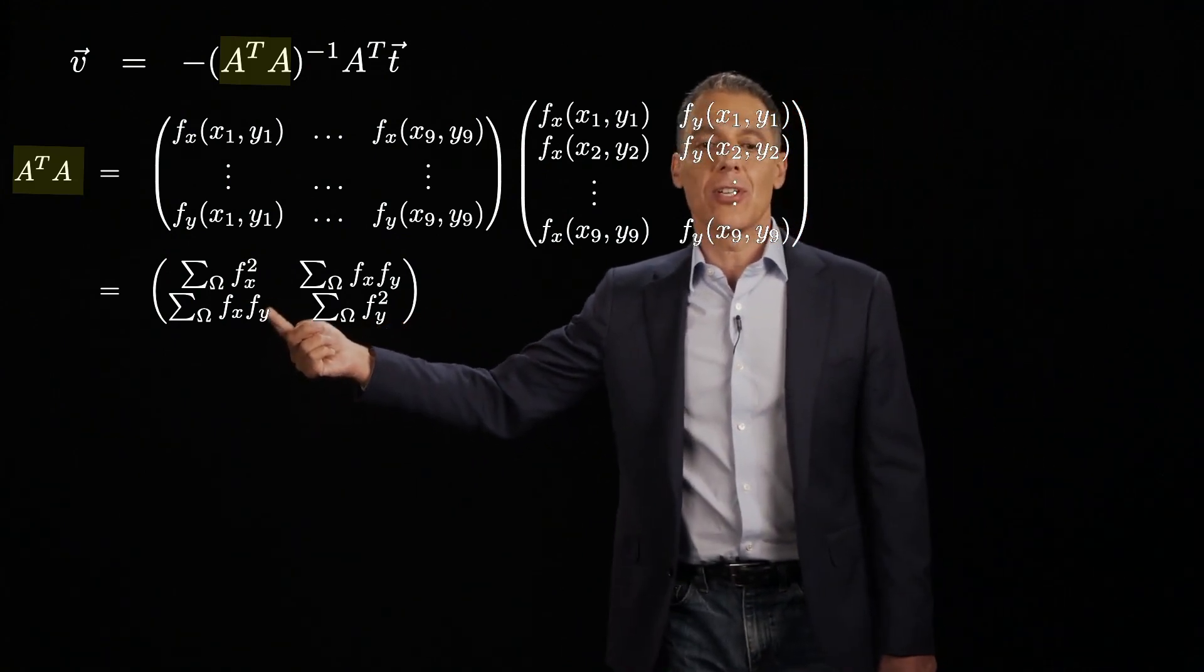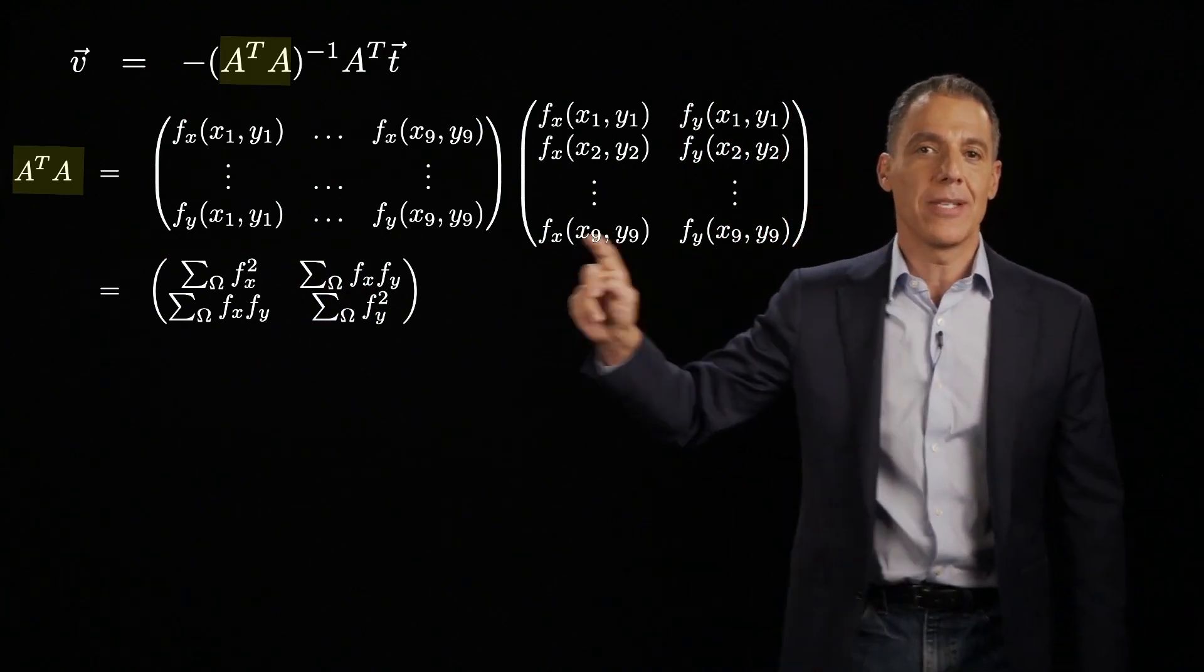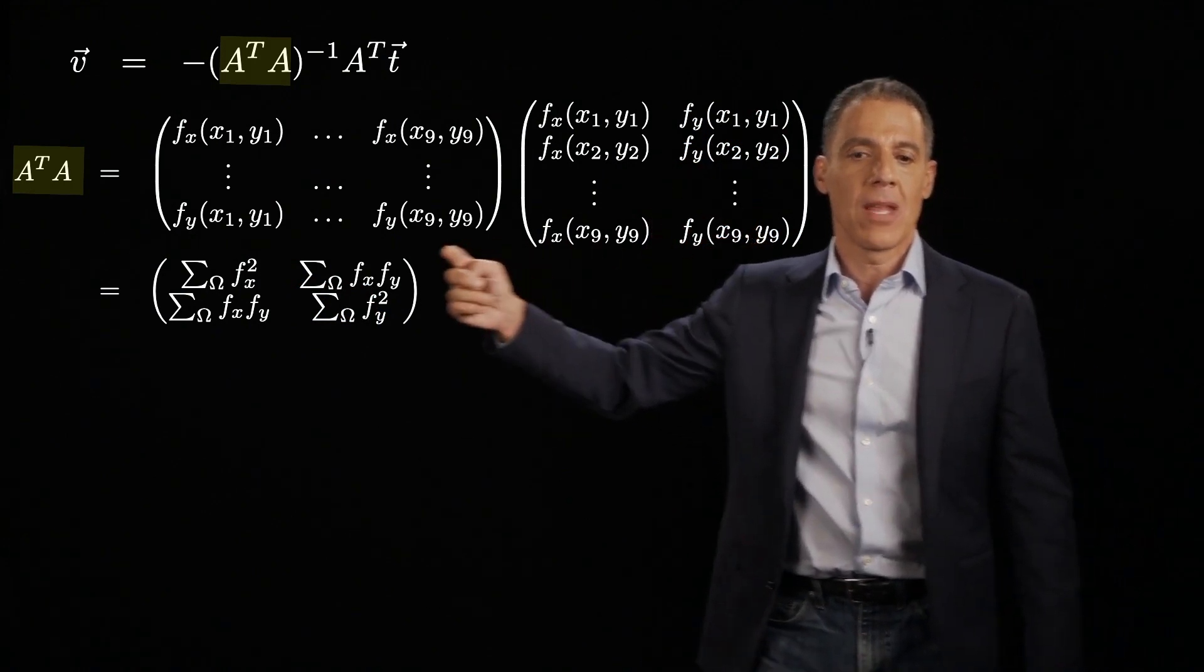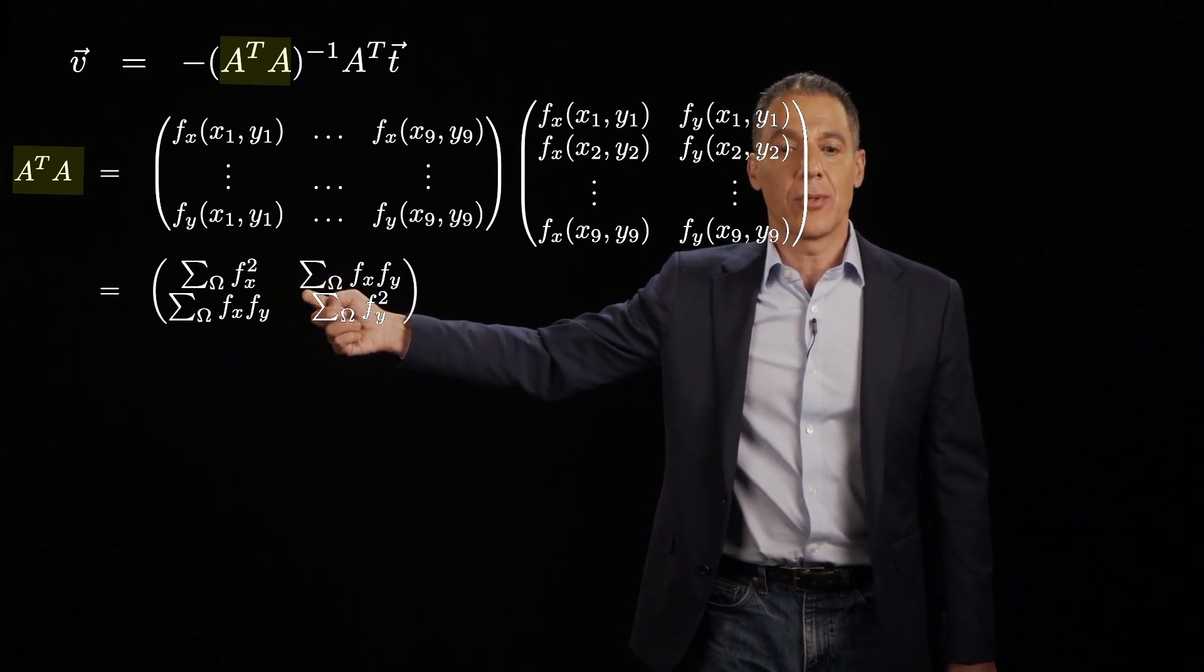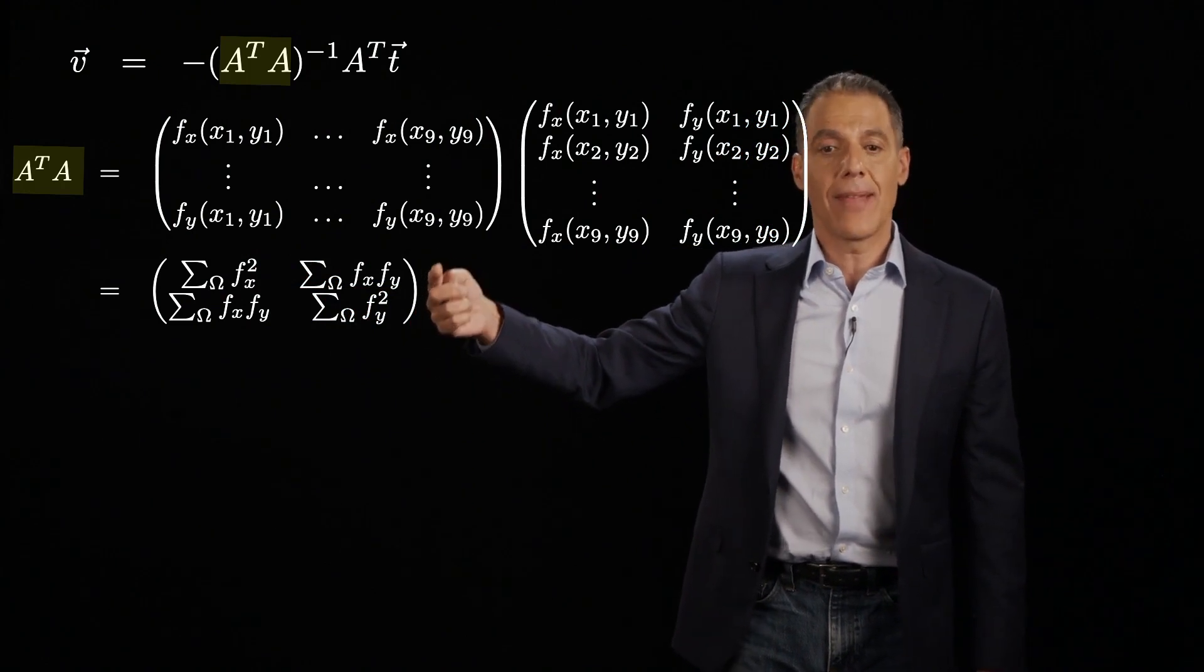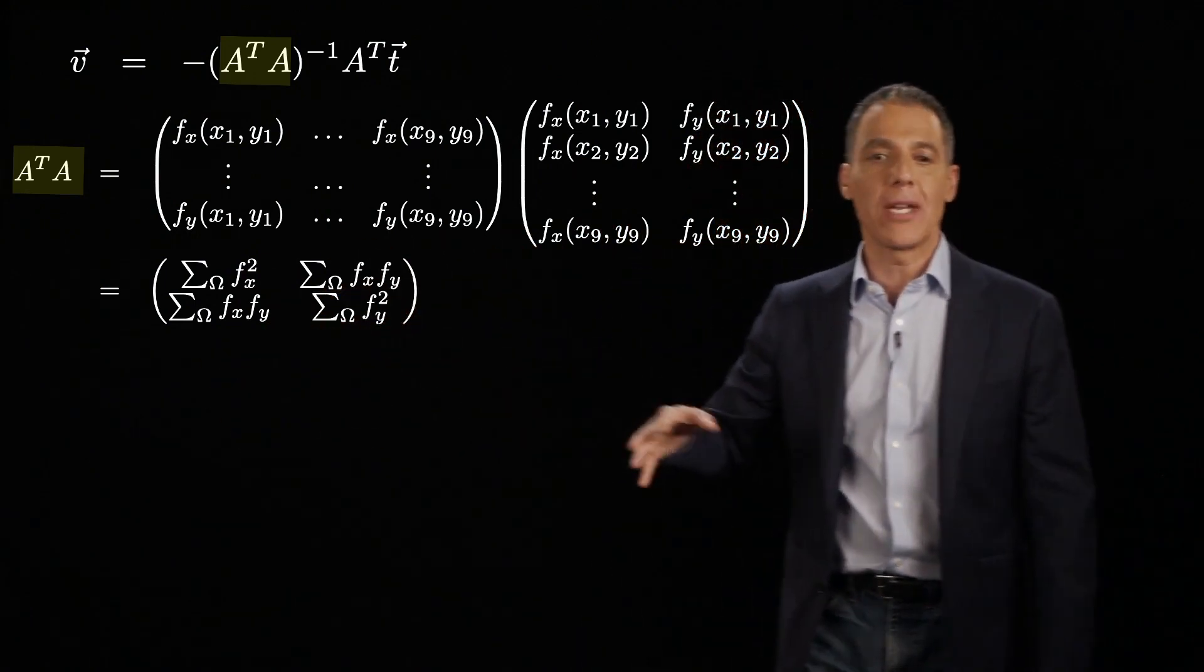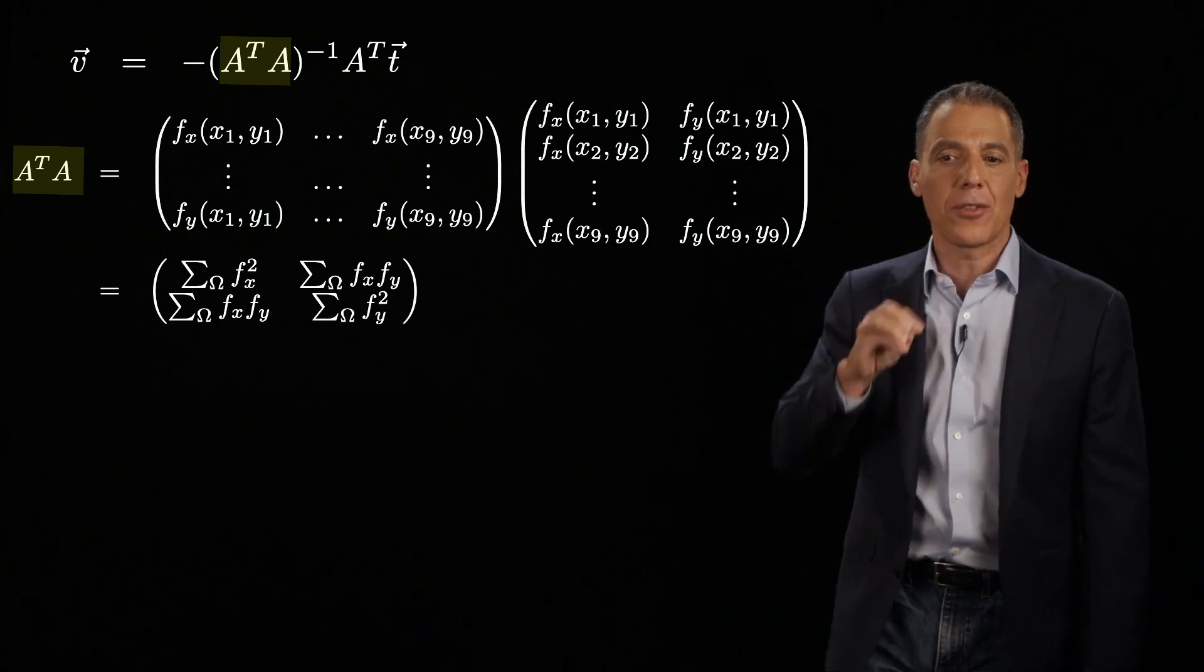So what is A? A is just the spatial derivatives for each of those nine pixels in the three-by-three block, where I assume the motion is constant, packed into a nine-by-two matrix. A transpose, of course, is just that transposed. And so I'm going to take the product of those two. This matrix is two-by-nine. This matrix is nine-by-two, and so the product of those is two-by-two. So now I have a little square matrix. In the first position, omega here is just my little nine-by-nine patch, I have the sum of the squares of the x derivatives. In the other diagonal, I have the sum of the squares of the y derivative. And then in the off-diagonal, I have the sum of the product of the x's and the y's. So a little two-by-two matrix, which is just different linear combinations of all the derivatives in that little three-by-three patch.